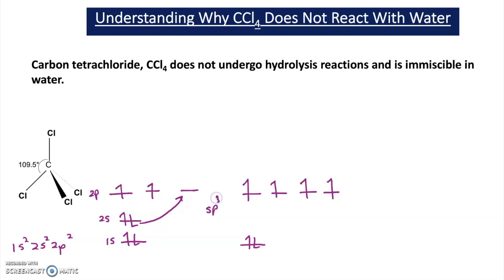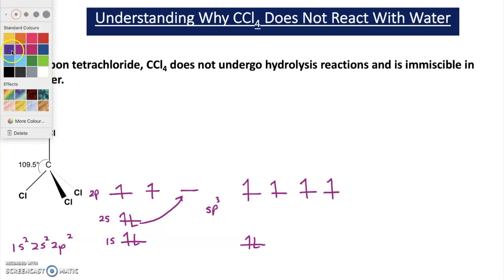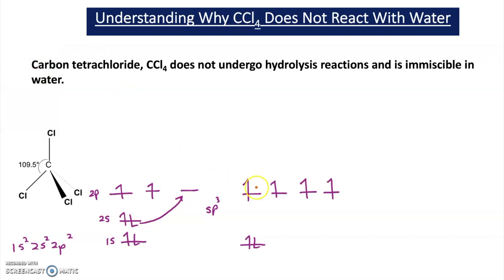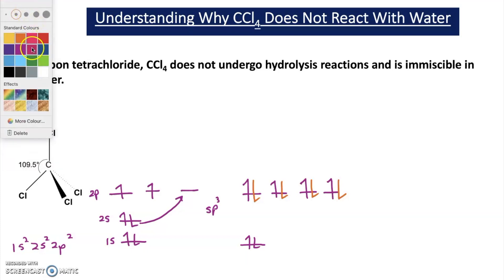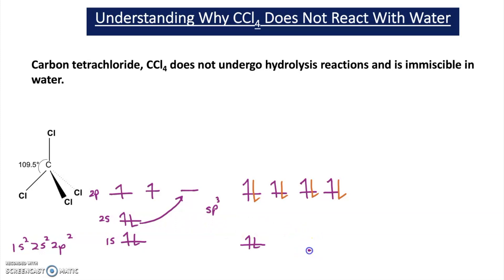Representing chlorine's electrons with a different colour — orange — we can put these electrons in. You can see that these new sp3 orbitals we've created are full. This represents the bonding in carbon tetrachloride, CCl4.